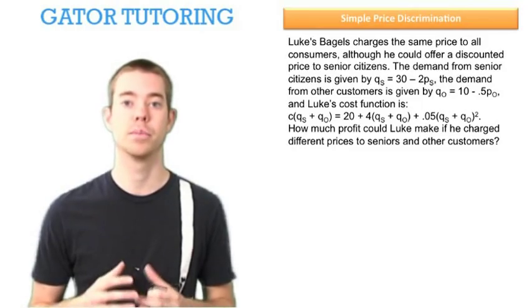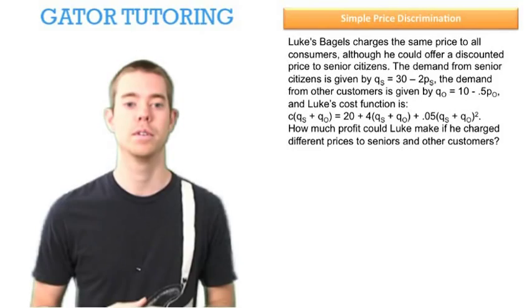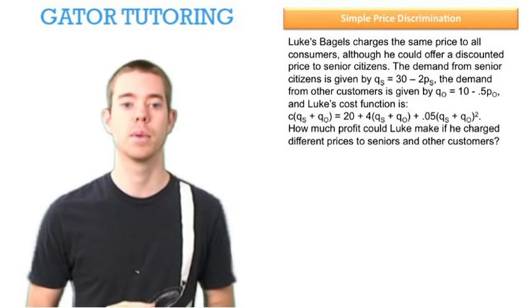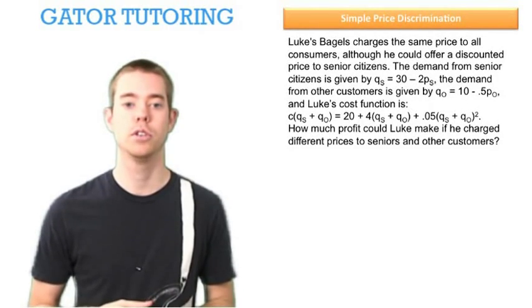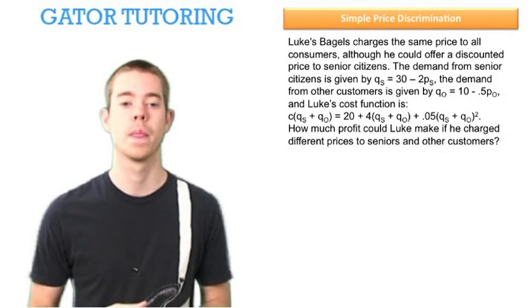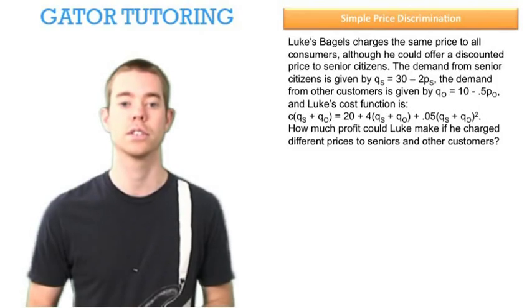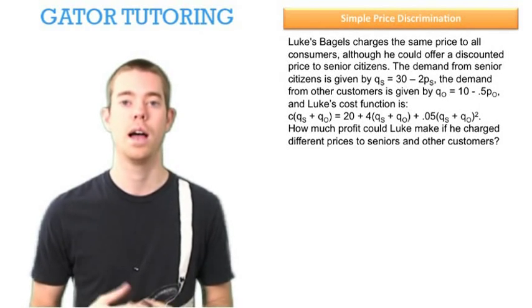Because they have different demands, if we charge them different prices, we would increase our profit. Luke's cost function is given by C = 20 + 4(QS + QO) + 0.05(QS + QO)². How much profit could Luke make if he successfully price discriminated and charged different prices to seniors and other customers?